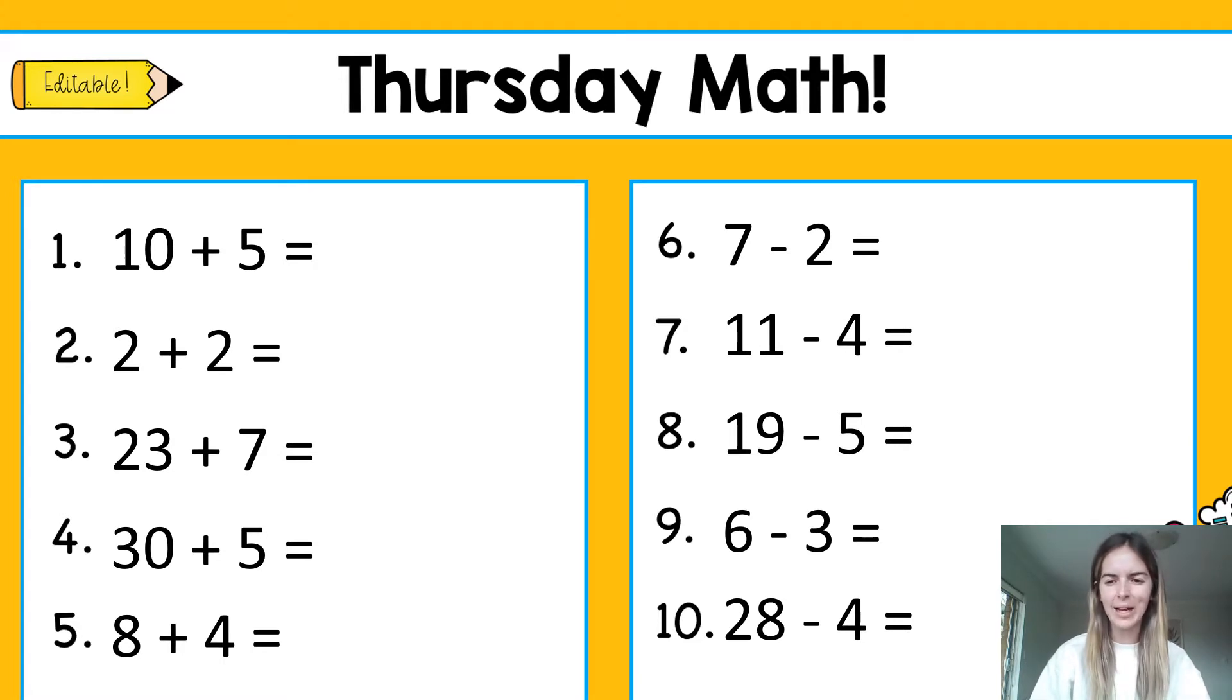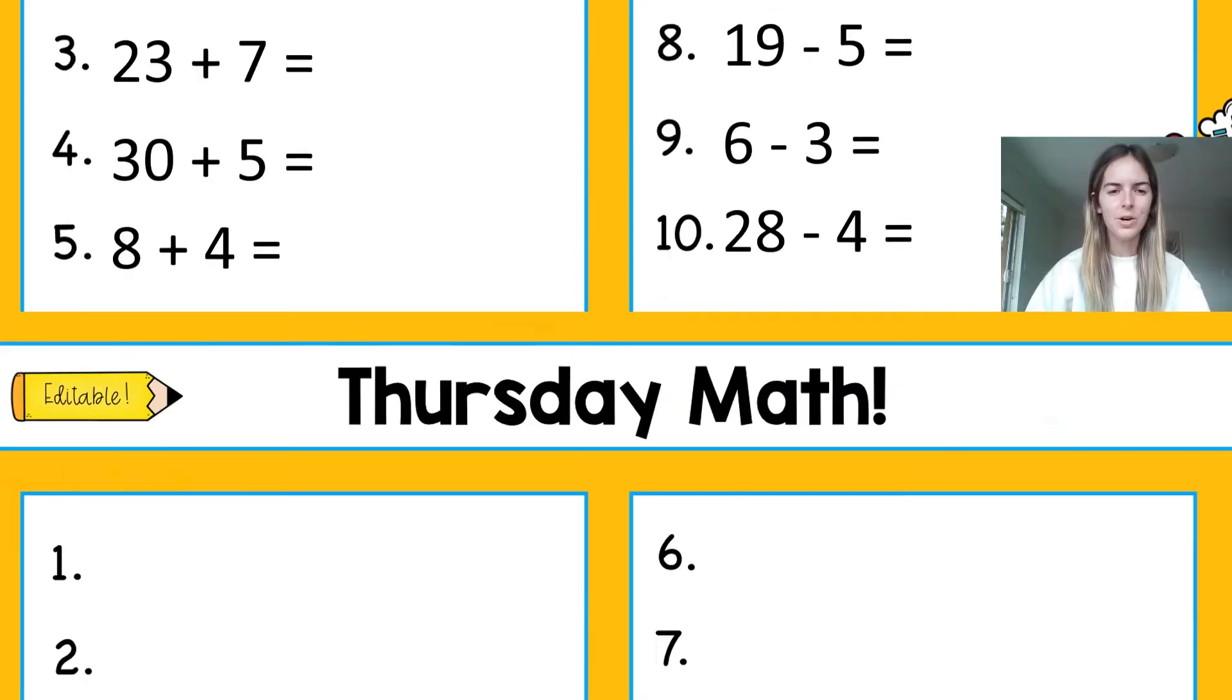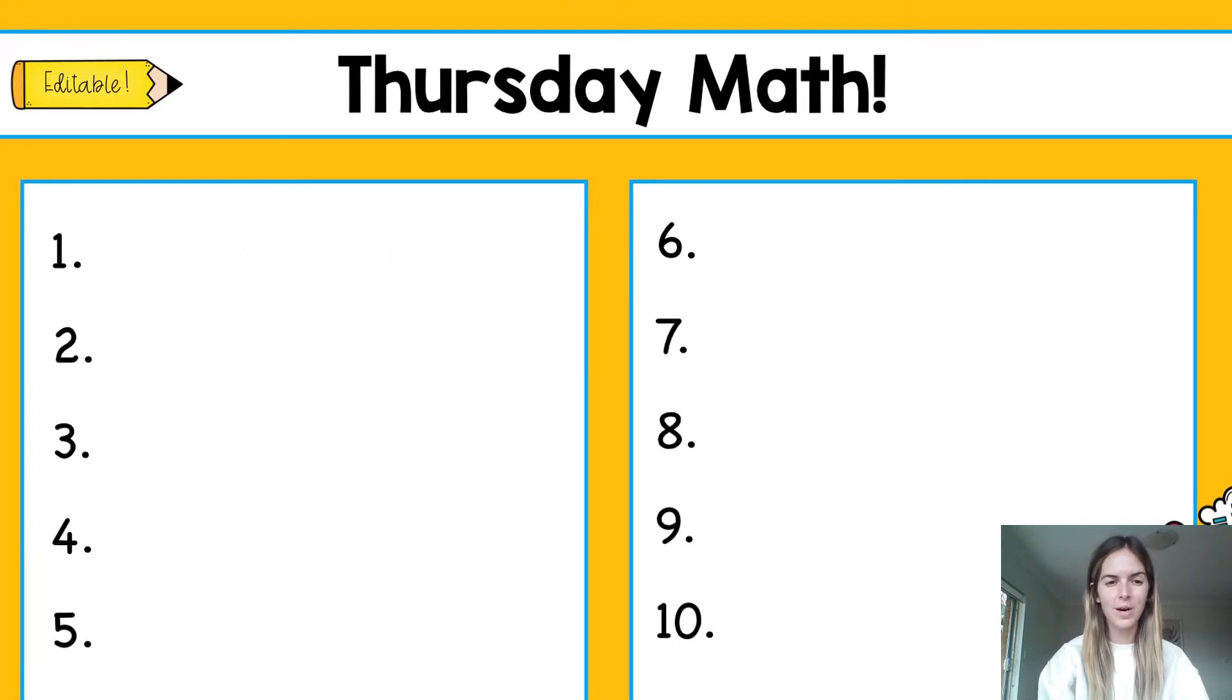All right, so let's take a look at the answers. Now you're only looking if you've completed them on a piece of paper. Our first one was 10 plus 5 and that equals 15. The strategy that I always love to use is counting on because I think that one is the quickest. I'm going to put 10 in my head: 10, 11, 12, 13, 14, 15. Our next problem was 2 plus 2, and if you know your doubles, we just know that that is 4 because 2 and 2 is 4.